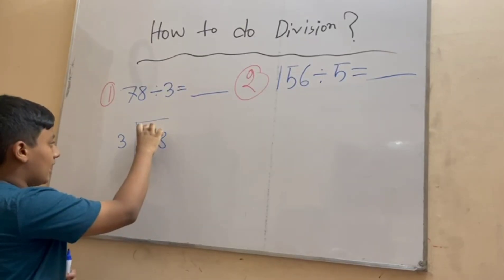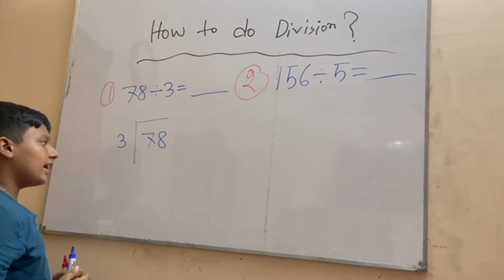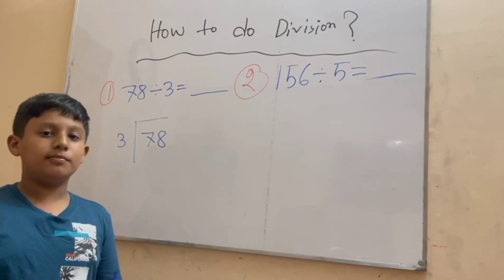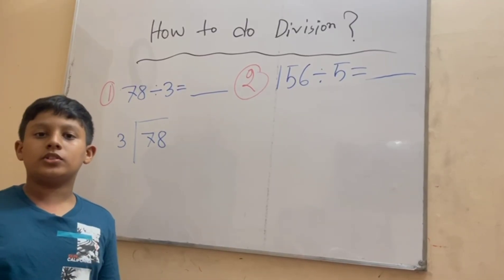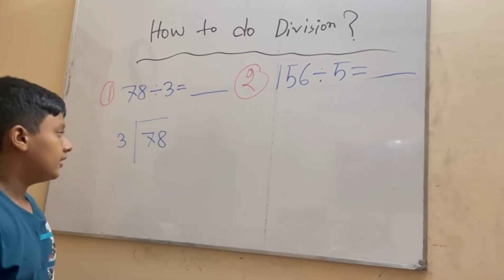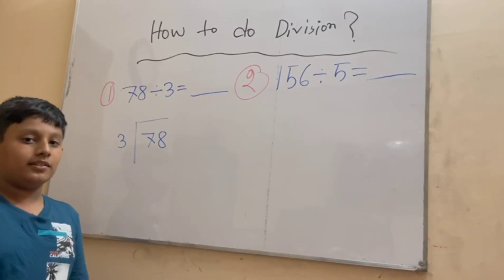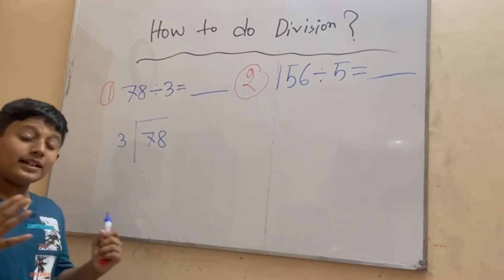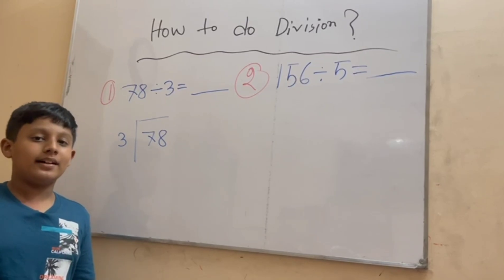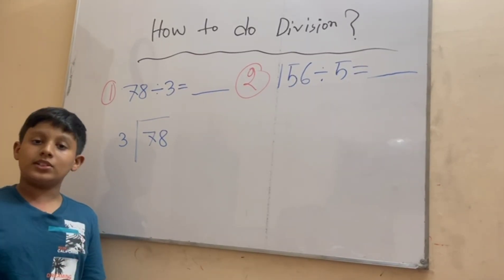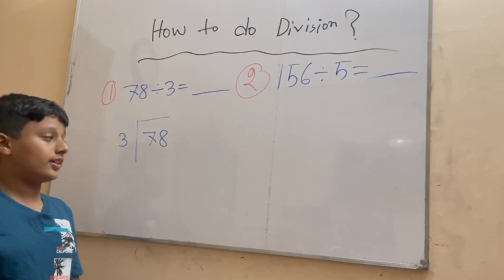We have to check how many threes will it take to make seven or almost close to seven. Three ones are three, three twos are six, three threes are nine. So three threes are nine is bigger than seven, so we have to take the closest number: three twos are six.